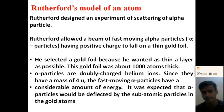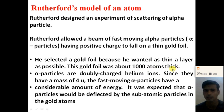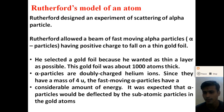Why was the golden foil selected? Rutherford selected a golden foil because he wanted as thin a layer as possible, and this gold foil was about a thousand atoms thick. The alpha particles are doubly charged helium ions since they have a mass of four amu — four times the mass of the hydrogen atom. The fast-moving alpha particles have a considerable amount of energy.